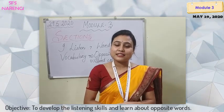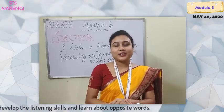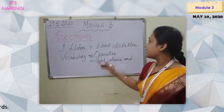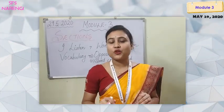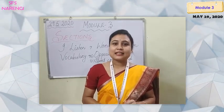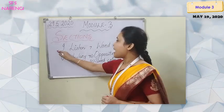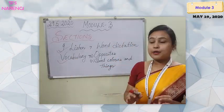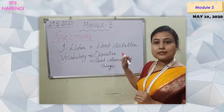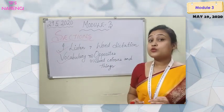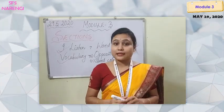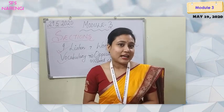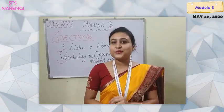I welcome you for a new day with a new chapter. The chapter we are going to do is from our English workbook — Module 3. How many sections do we have in this module? We have 4 sections. The first section is 'I Listen,' where we have dictation. The second is vocabulary, where we will learn opposites and also sort colors and things. There are 2 more sections: grammar and 'I Write,' which we will do in our next class. For today, we will focus on the first two sections.